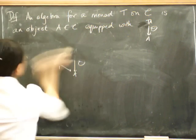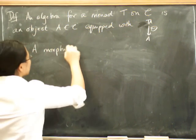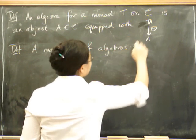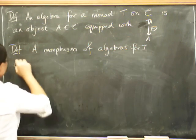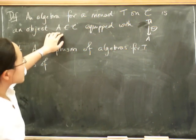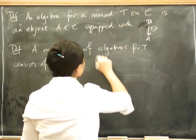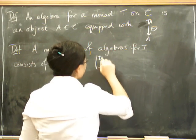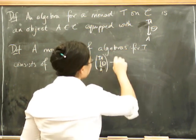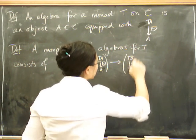I'll just take these away so I have space. Definition. A morphism of algebras for T consists of, well, let's see. We've got an object A. So let's say what our two algebras are that we're thinking about. So we're going to have a morphism of algebras and it's going to go from, here's one of my algebras, and this morphism is going to go to another algebra, TB to B, with an action given by phi.